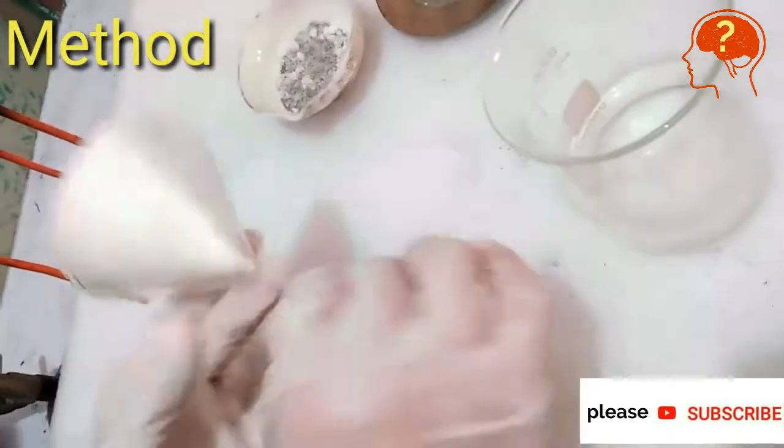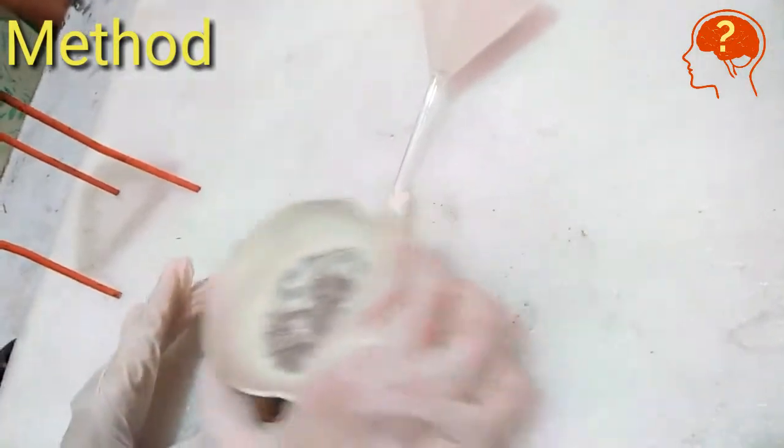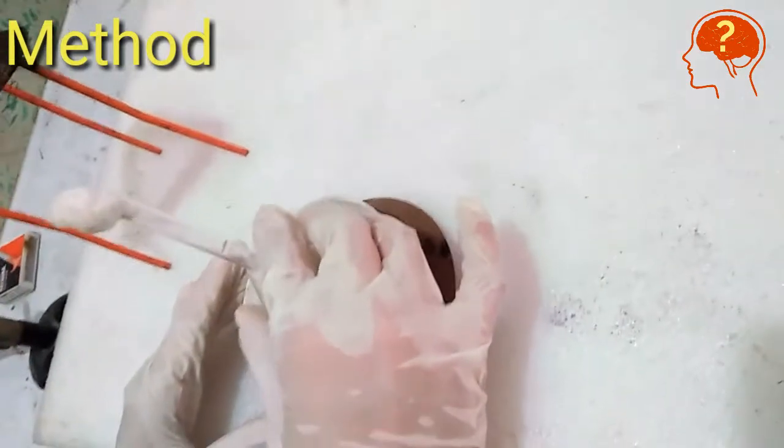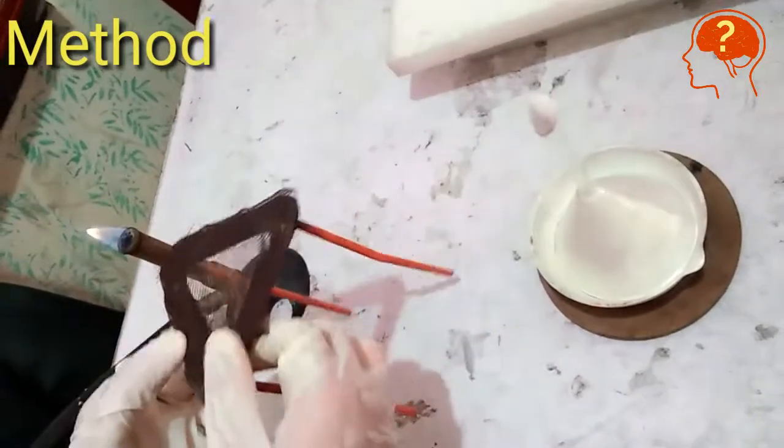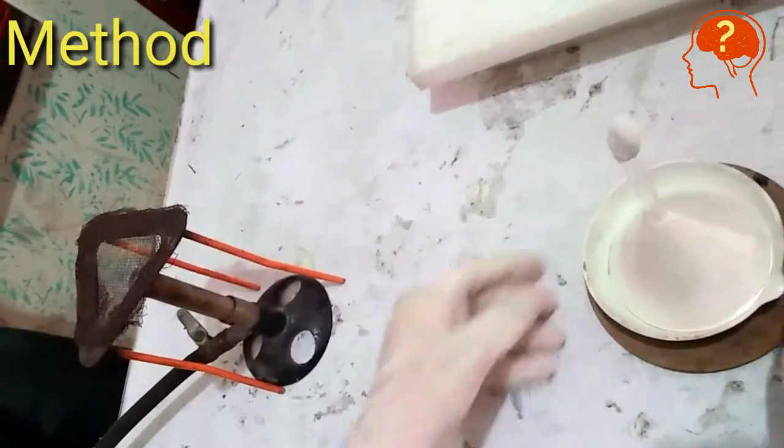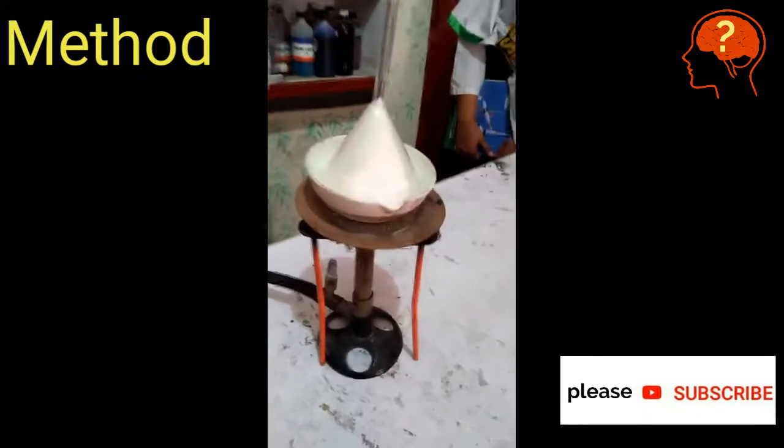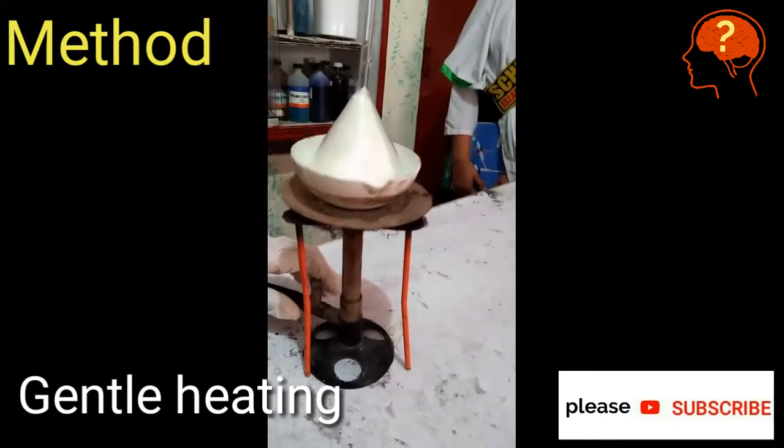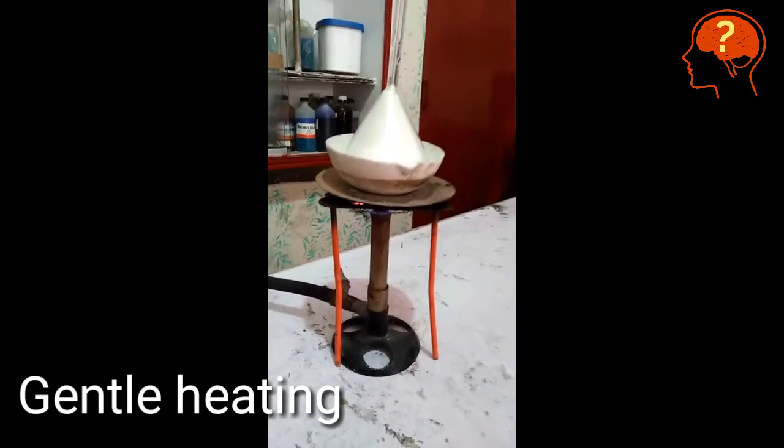It would prevent vapors from releasing out. Now put the mixture on sand bath and invert the funnel over the mixture. Light up the lamp and place tripod stand over the lamp, and also place the sand bath on the tripod stand. Allow it to heat for four to five minutes on gentle heating. Don't use high flame; it should be heated gently. After five minutes, remove the funnel and check.